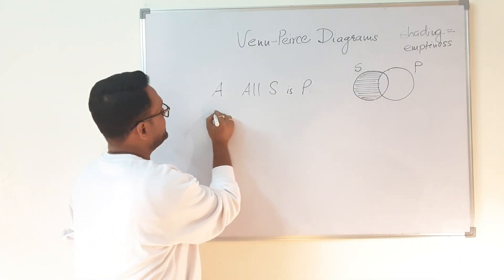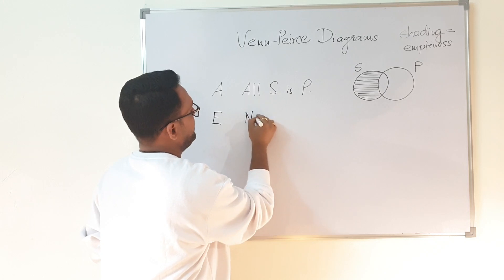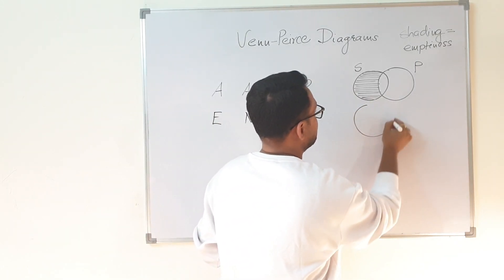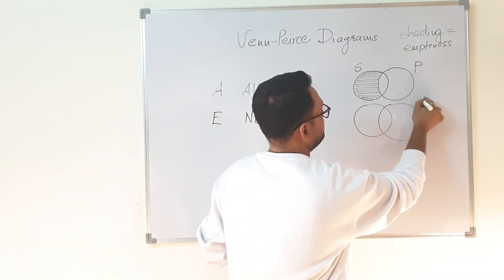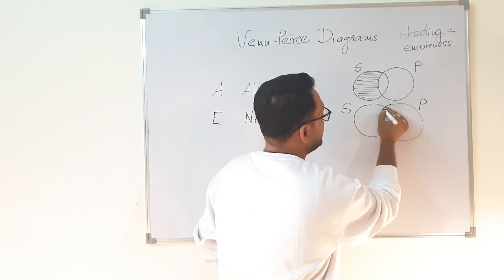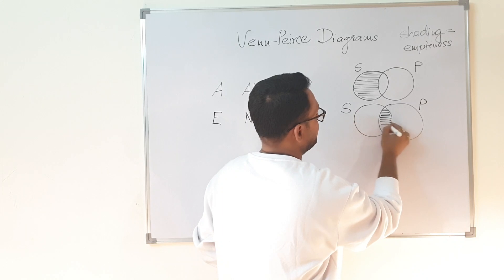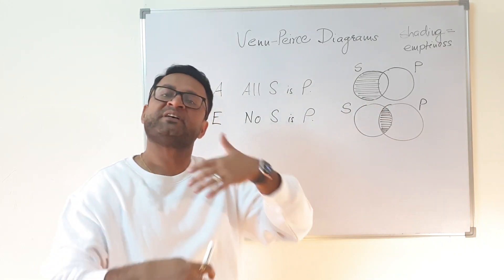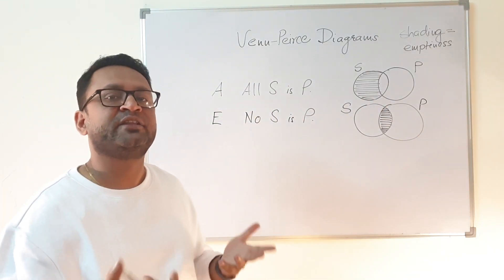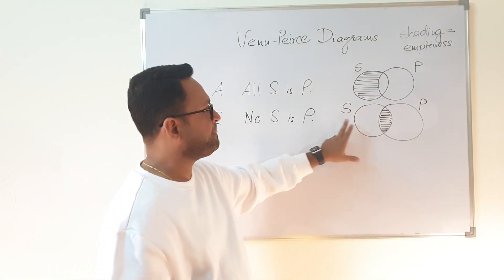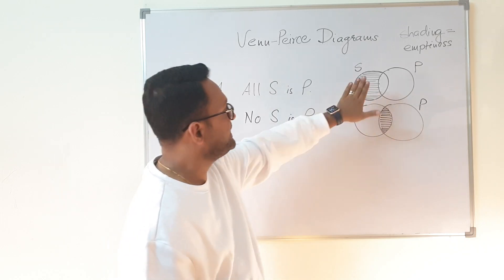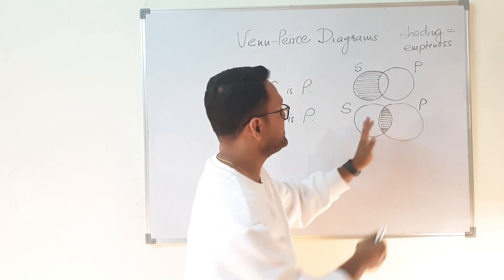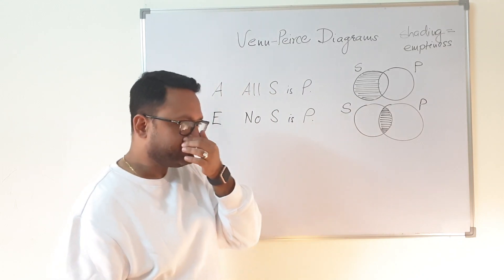Now similarly, if we take E — that is 'no S is P' — we again draw two intersecting circles S and P, but now we shade the common intersection part, because there is no common part. 'No S is P' says that the common part of S and P does not exist. So 'no S is P' is drawn with the intersection shaded, while 'all S is P' has the exclusive part of S shaded — whatever S contains is entirely within P.